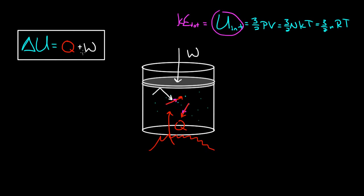Let me talk a bit more about this work done, because getting the sign right is important. If you're doing work on the gas — compressing it — you're adding energy to the gas. But if you let the gas push up on the piston and the gas expands, pushing the piston up, then the gas is doing work — that's energy leaving the system. So if the gas does work, you subtract it. Work done on the gas: energy goes in. Work done by the gas: energy goes out.